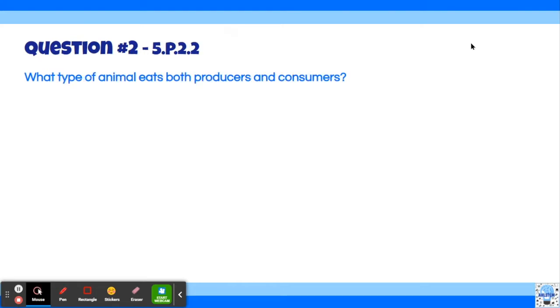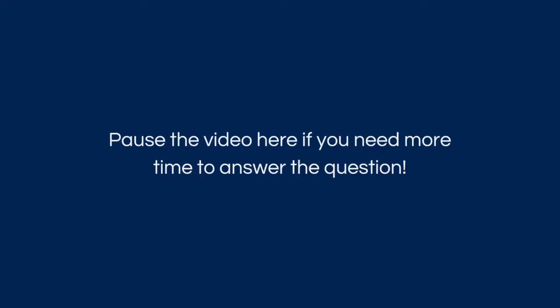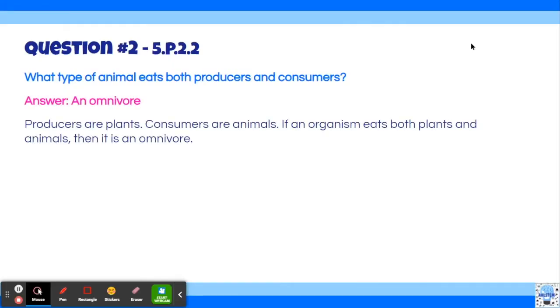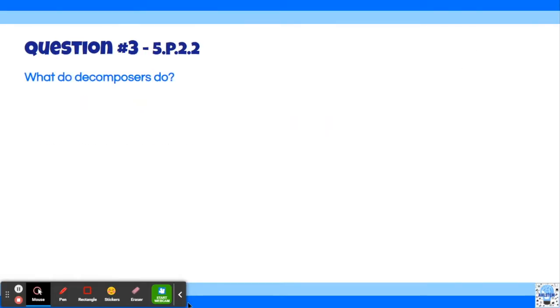Okay, moving on. What type of animal eats both producers and consumers? The answer is an omnivore. Producers are plants and consumers are animals. So if an organism eats both plants and animals, then it's an omnivore.